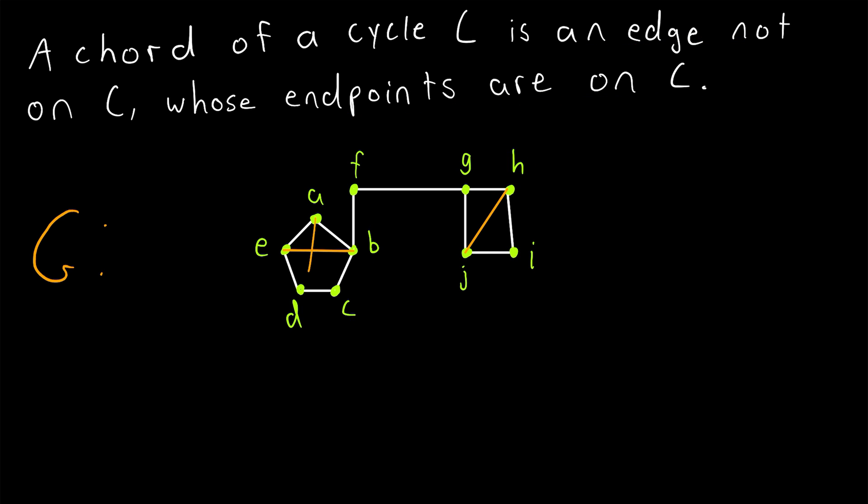Drawing just one more example of a chord over here, this edge joining A and D is another chord of this cycle. We could also call it a chord of the graph G, since it is a chord of a cycle in G.